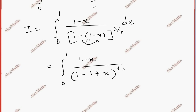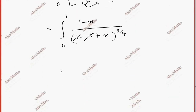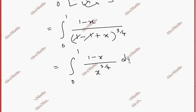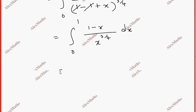So minus (1 minus x) equals 1 minus 1 plus x, giving (1 minus x) plus 2 by x, also equal to 4 by 4. Now we have to join the integral. So integral 0 to 1, (1 minus x) by x power 3 by 4 dx, and (1 minus x) power 3 by 4 dx from 0 to 1 equals 1.